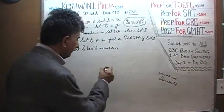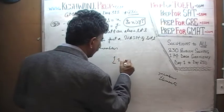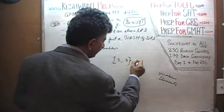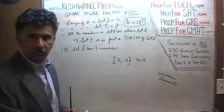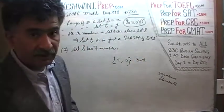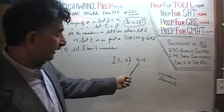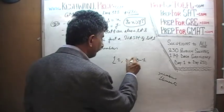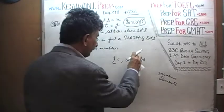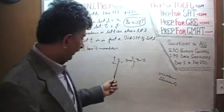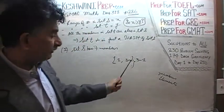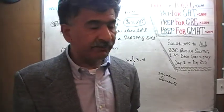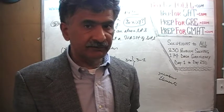For example, we may have a set containing two numbers, one and three, where the range is three minus one, which is two. Or we could have a set with two members where one is one and the other is three million, in which case the range is three million minus one. So the range has absolutely nothing to do with the number of elements in the set.